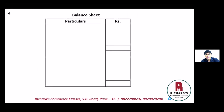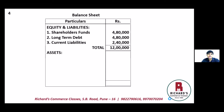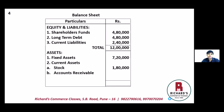Preparing the balance sheet in vertical format. Equity and liabilities: shareholders funds four lakh eighty thousand; long-term debt four lakh eighty thousand; current liabilities two lakh forty thousand. Total liabilities: twelve lakh rupees. Asset side: fixed assets seven lakh twenty thousand. Current assets breakdown — stock one lakh eighty thousand, debtors two lakh forty thousand, other current assets sixty thousand. Total assets also twelve lakh rupees. Balance sheet tallies.